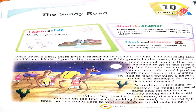During his journey he had to pass through a desert — ek reela raasta paar karna tha usse. To usne kuch paani apne saath liya, aur chawal aur firewood — firewood matlab lakdi jalaane ki — kuch sources apne saath le liye. According to his plan, usne apna maal packed in several carts mein kar liya.